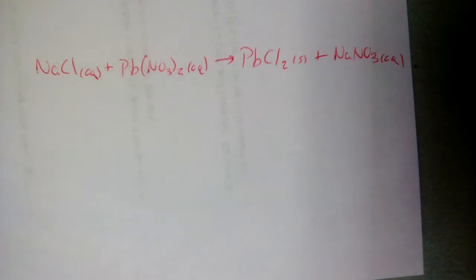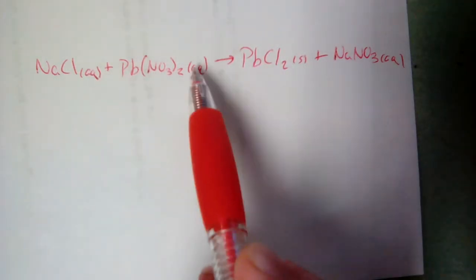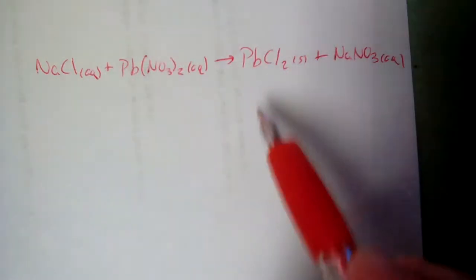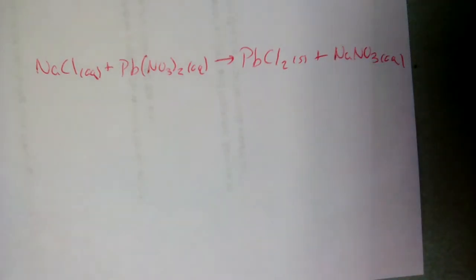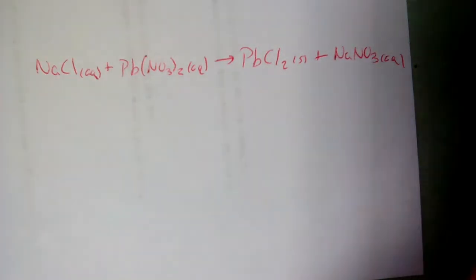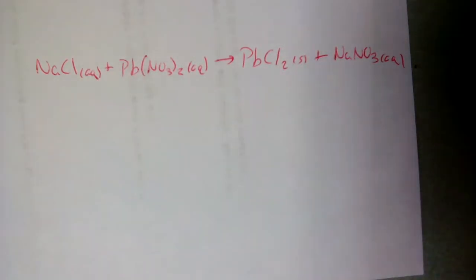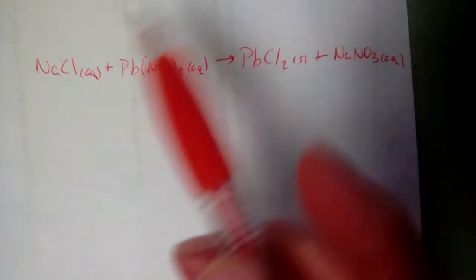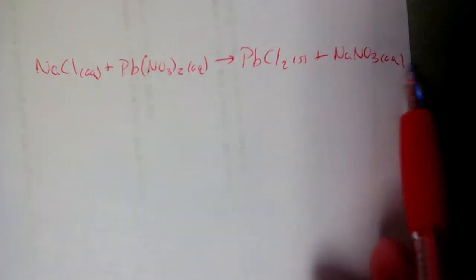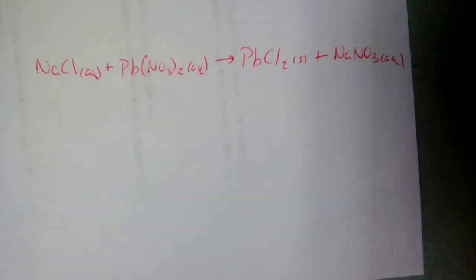Here's our reaction: aqueous sodium chloride reacting with aqueous lead(II) nitrate to produce solid lead(II) chloride and aqueous sodium nitrate. This is a precipitation reaction — two aqueous solutions combine to make a solid called a precipitate. Step one: get a balanced equation with states in it. This one has states but isn't balanced yet, so we balance it first.